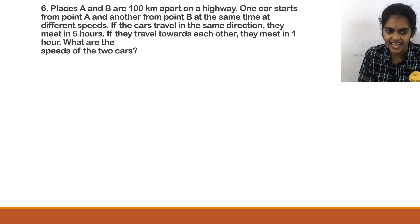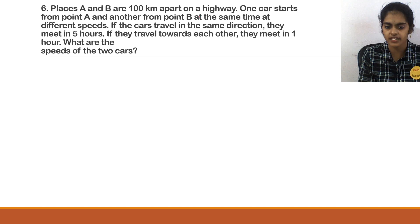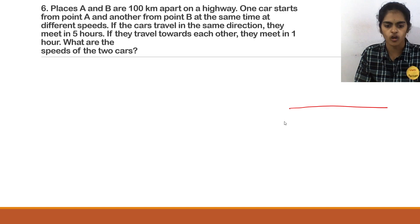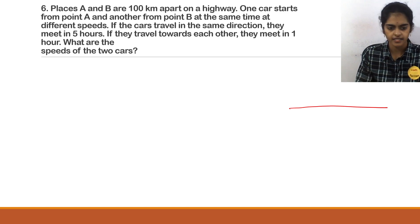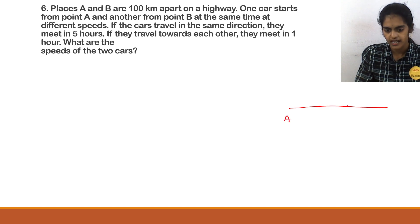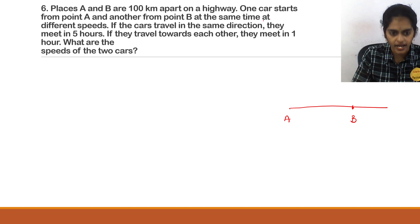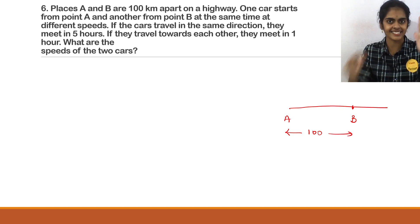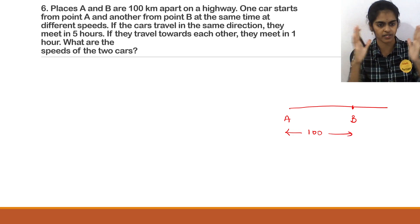Places A and B are 100 km apart on a highway. So you have a highway — this is a highway — and on this highway you have places A and B. Place A is here and place B is here. The distance between these two places is 100 km.